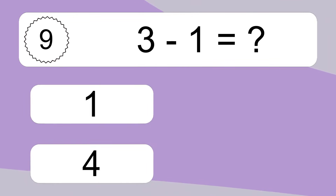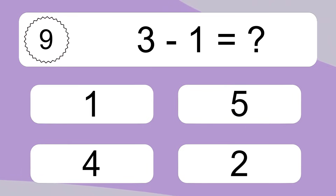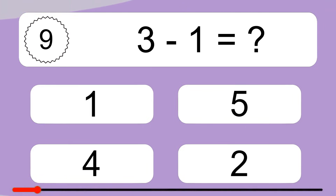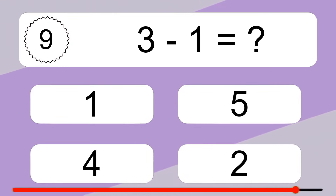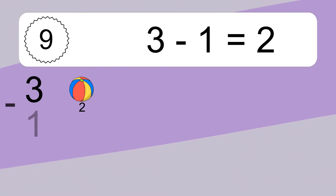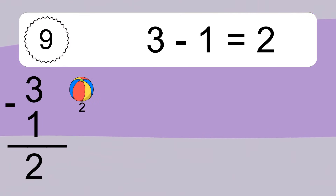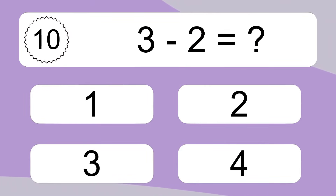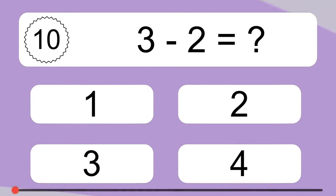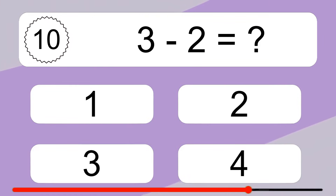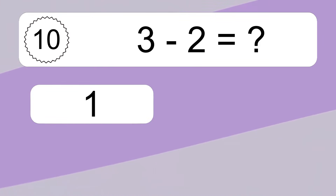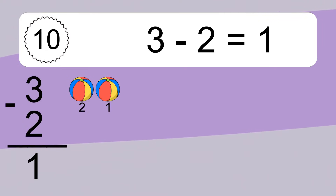3 minus 1 equals what? 3 minus 1 equals 2. Let's count it: 2. 3 minus 2 equals what? 3 minus 2 equals 1. Let's count it: 2, 1.